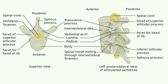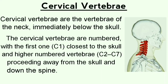The first section is the cervical vertebrae. Cervical vertebrae are the vertebrae of the neck, immediately below the skull. They are numbered with the first one called C1, which is closest to the skull. The first cervical vertebra, C1, is called the atlas, and it directly connects to our skull.